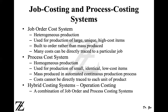Job order costing is used for production of large, unique, high cost items — such as building bridges, hospitals, freeways, and ships. No two items are the same. For example, even if a builder is constructing two identical houses, one buyer may want carpet while another wants tile or wooden floors, or different paint colors. That makes the two products different and unique, and these are large, high cost items.